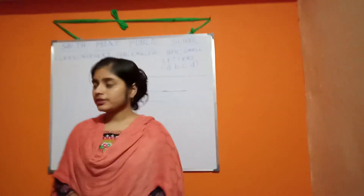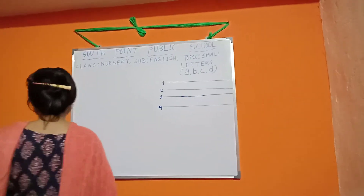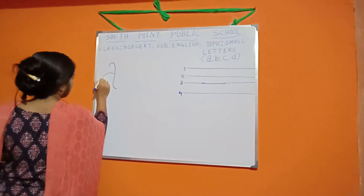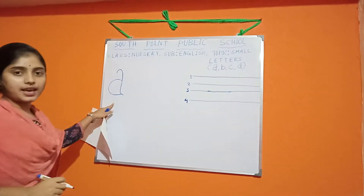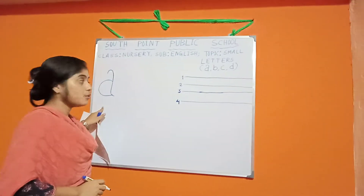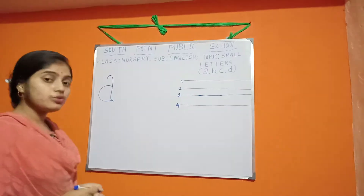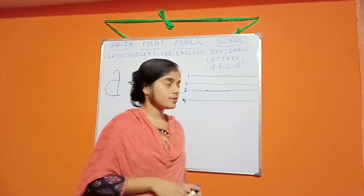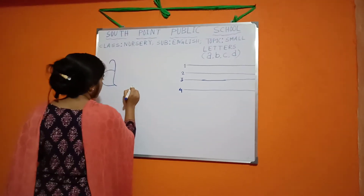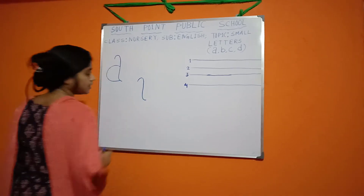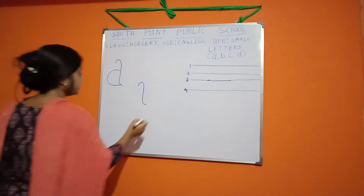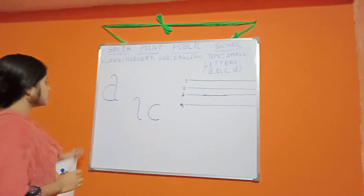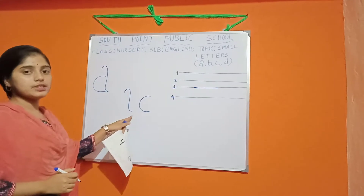Now look at the book. This is A. To write A, we need two curved lines. This is one curved line and this is the other. To write A, we need those curved lines.